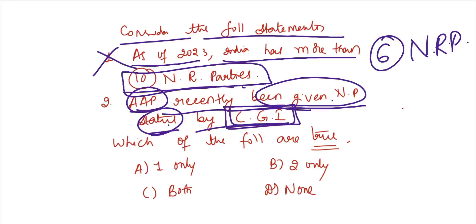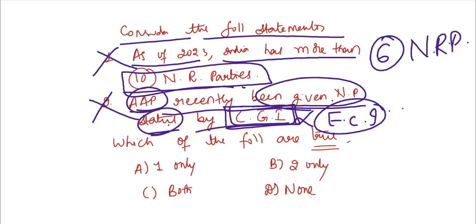If you recently read about national parties, the correct flow is that D-None is the correct option. This is not done by the Central Government of India but by the Election Commission of India. So D-None is the correct option. If you put it in the comment box, D-None is the correct option.